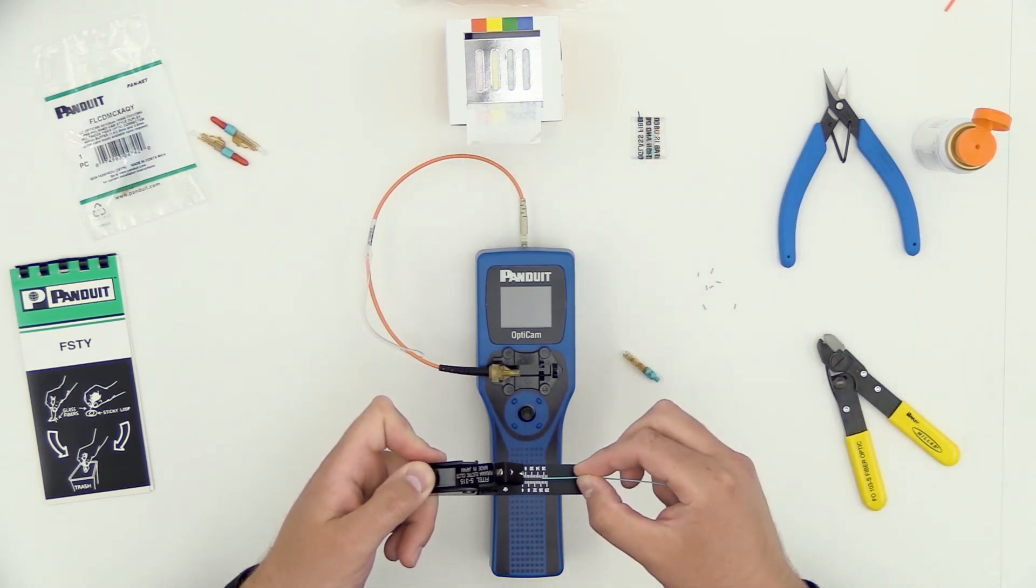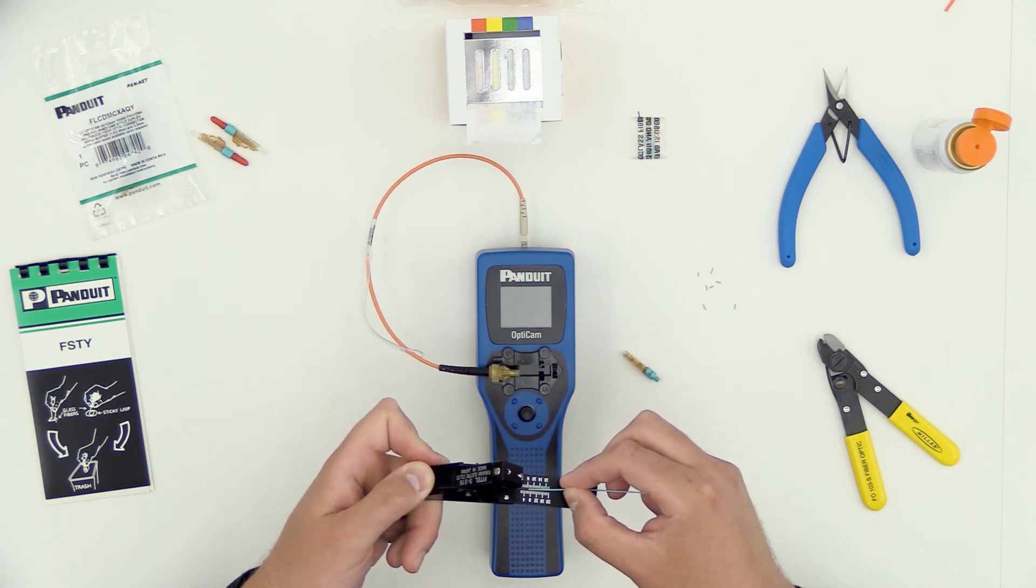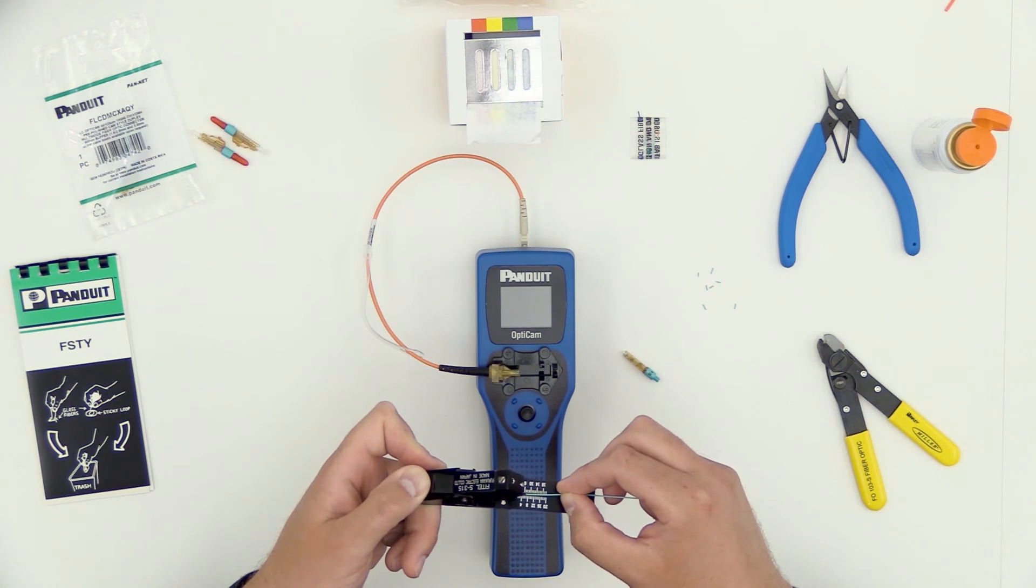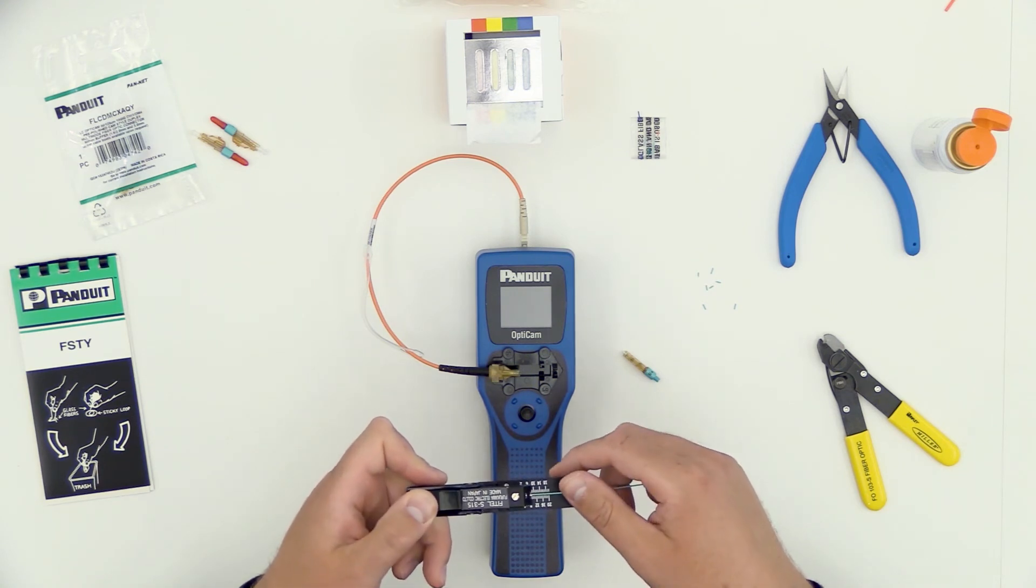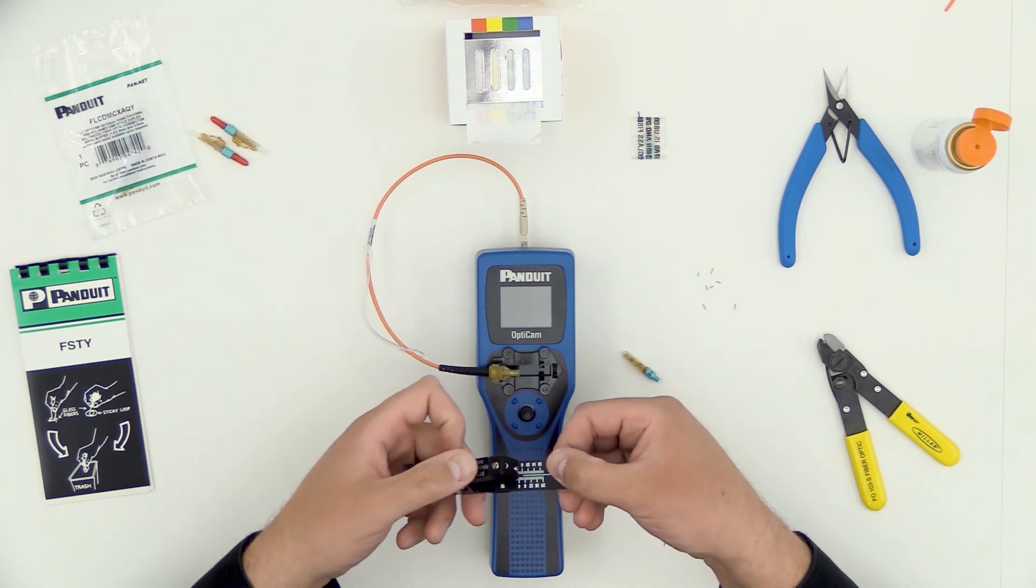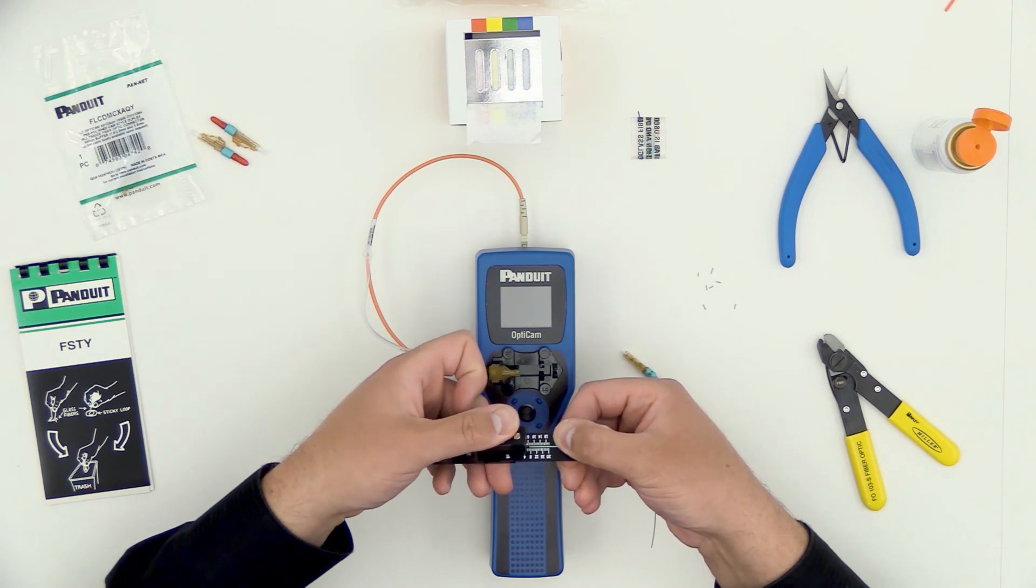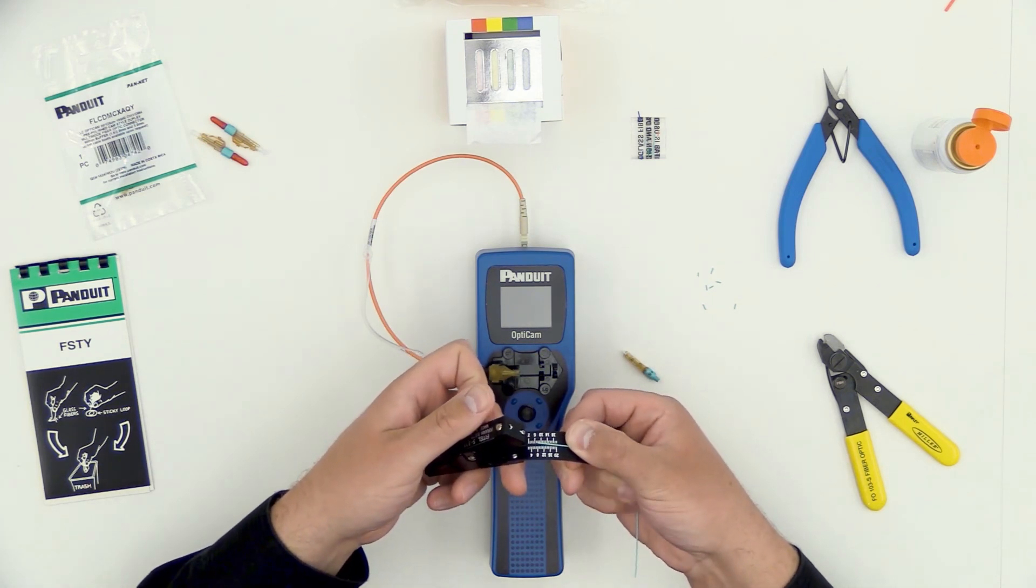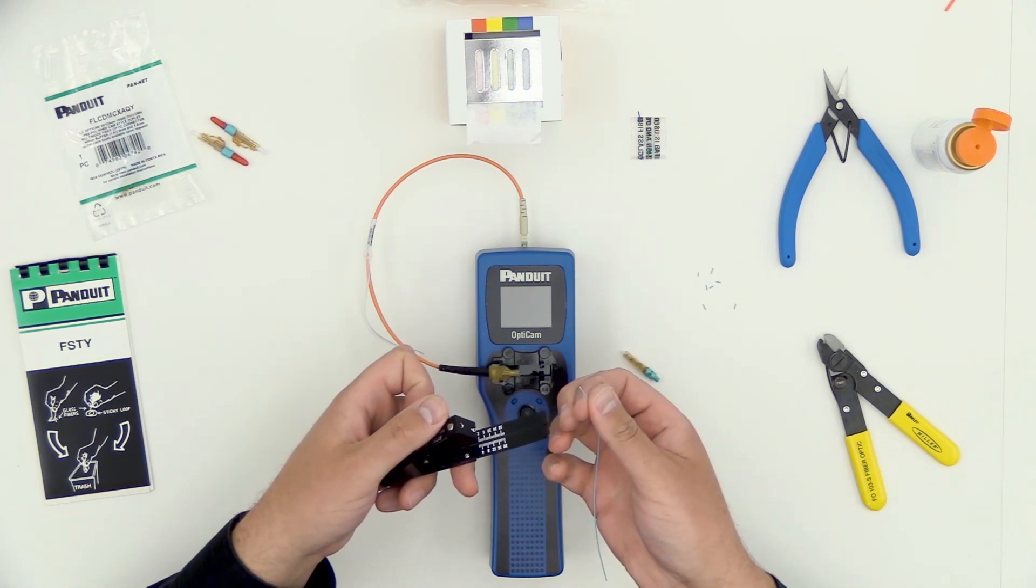Now I'm going to insert my new glass, I'm going to advance the buffer to the 7mm mark. It's the little mark just after the 8, clamp that down, hold the cable just a little bit taut and it's a gentle touch and now I've got my fiber cleaved.